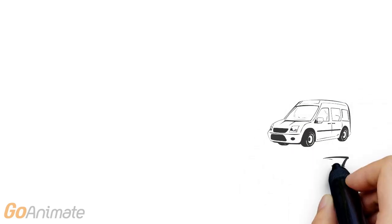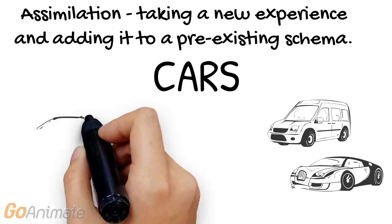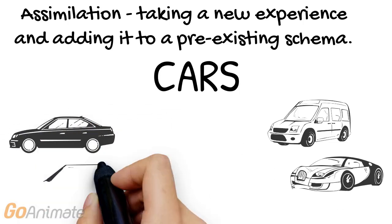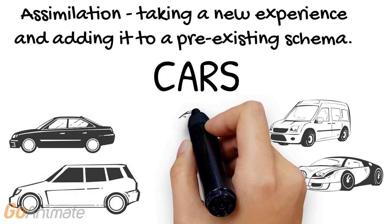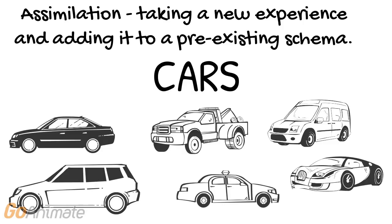Assimilation is taking a new experience and incorporating it into an existing schema. For example, if you're a child learning what a car is and you see a truck or a van, you might notice that cars, vans, and trucks have four wheels, and you may call a van or a truck a car too.